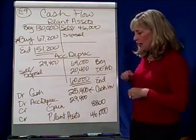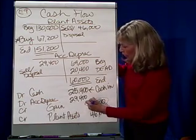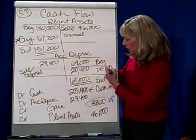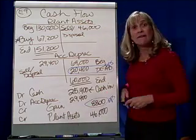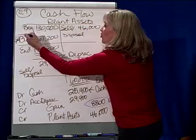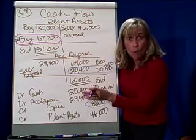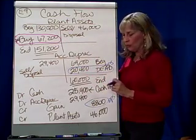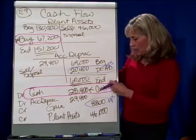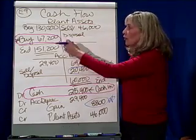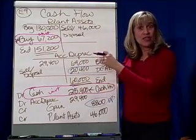Notice that in the operating section I am showing the gain, and the depreciation also shows up in the operating section. But when I get down to the investing section, I'm going to show that the cash going out — because I bought — is $67,200, and the cash coming in comes from the reconstruction of the sale entry: $25,400. So these are what shows up in the investing section, because that's the cash in and the cash out.